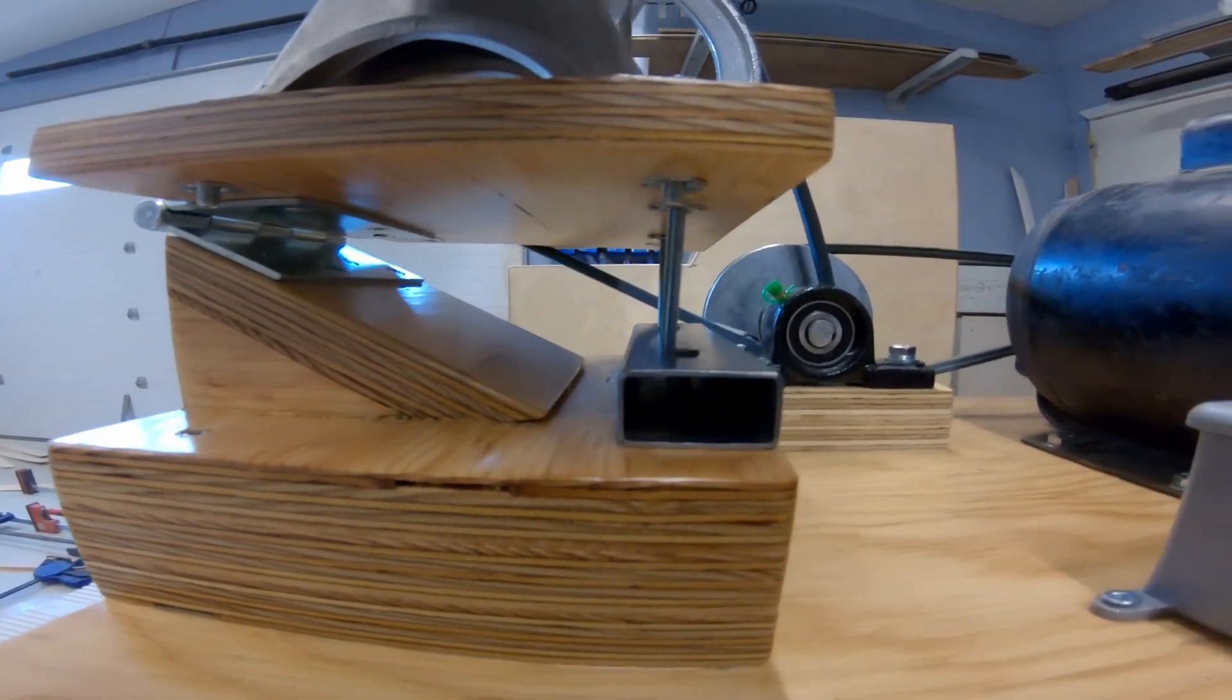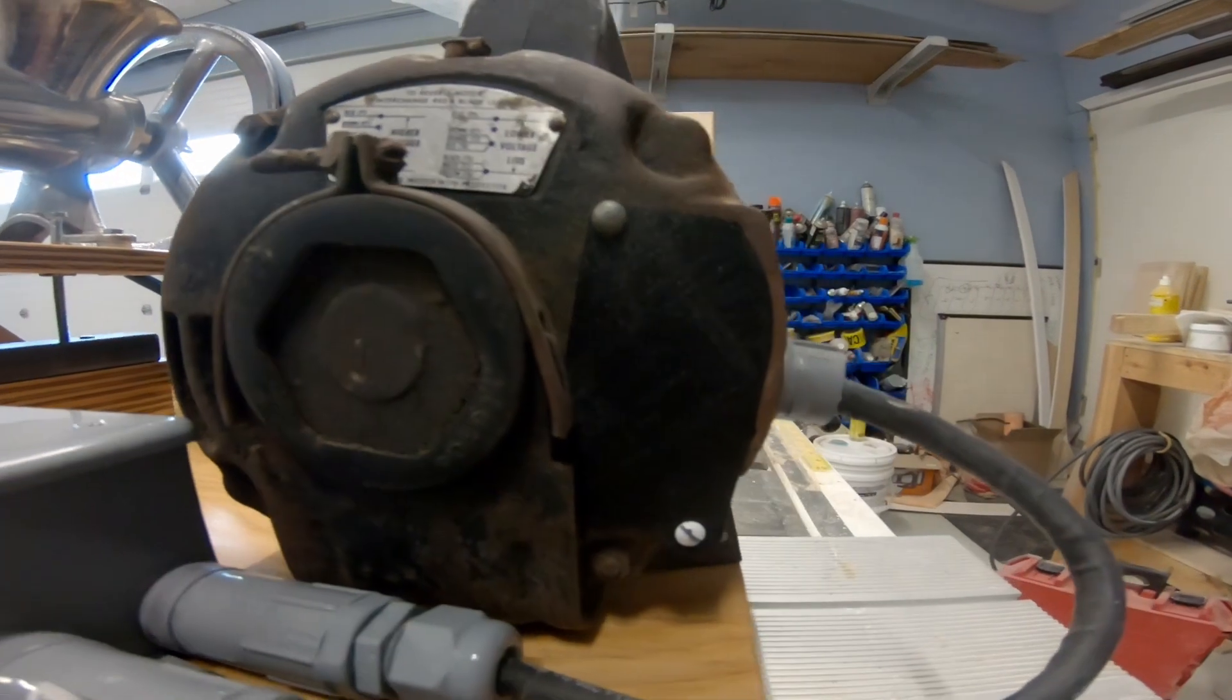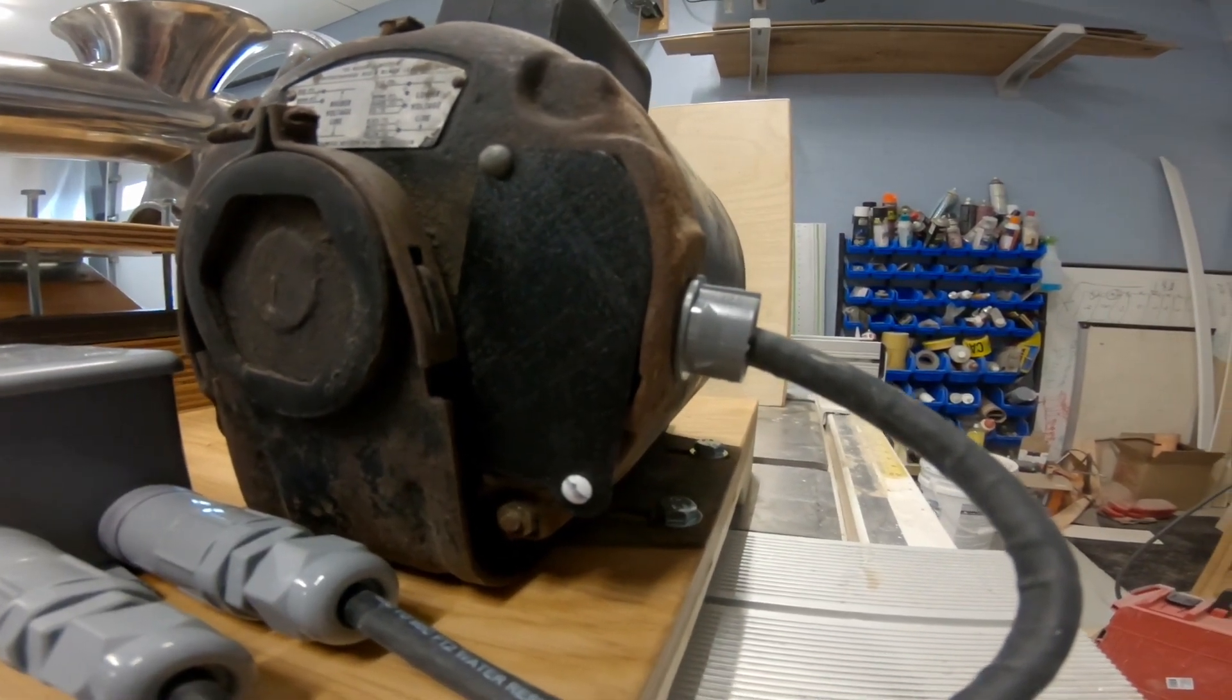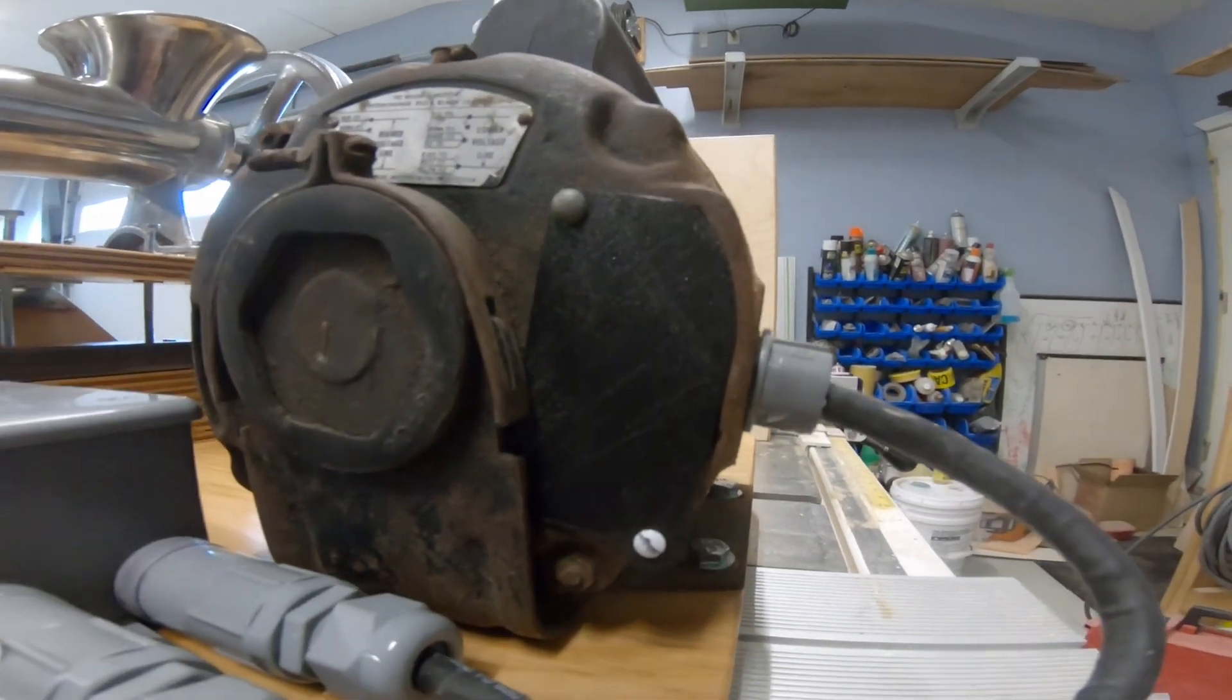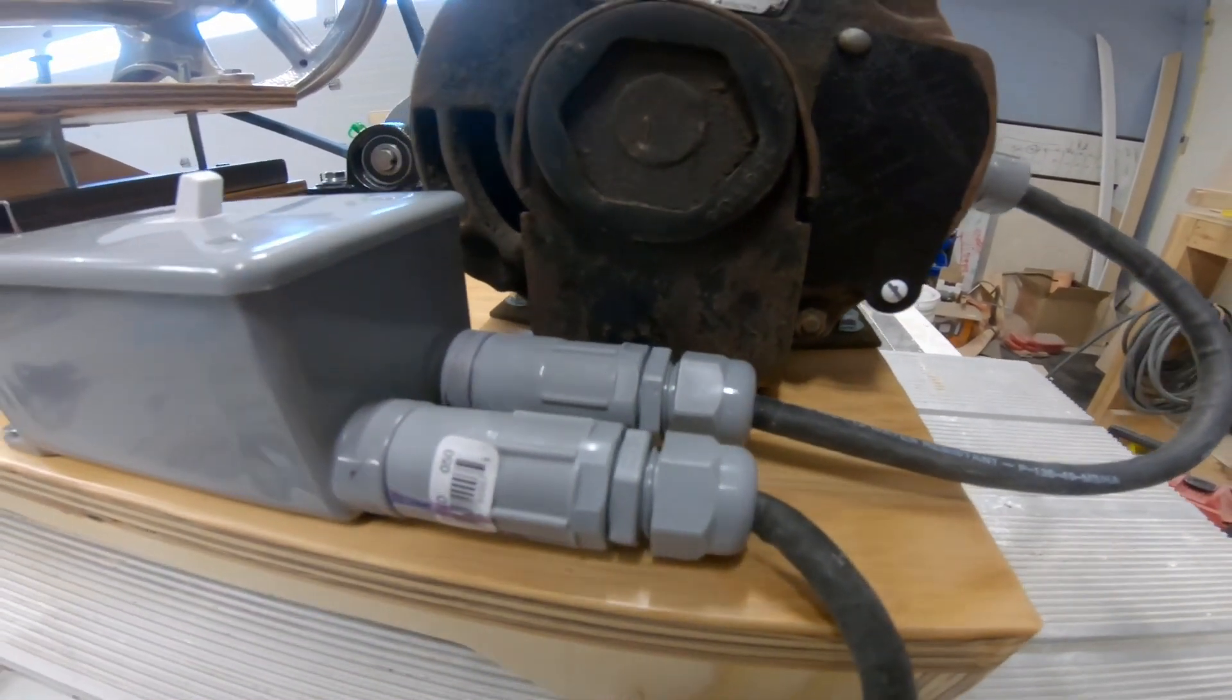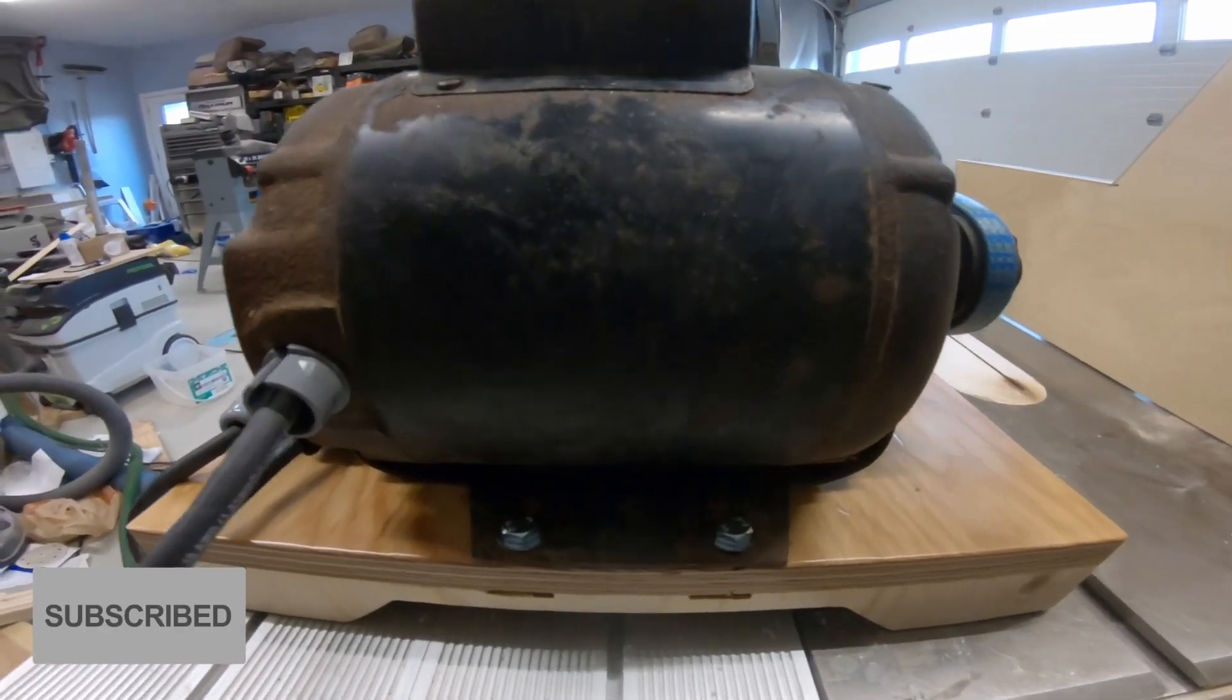The tensioning bolts for the meat grinder screw down onto a steel tube, which prevents denting into the wood and gives it a secure base so the tension remains consistent. This is an old electric motor we were repurposing, and the cover for the electricals was missing, so I quickly came up with a design and 3D printed one for that protection.